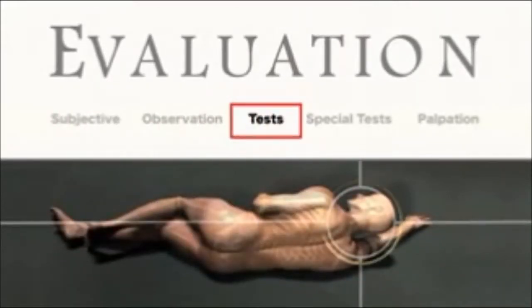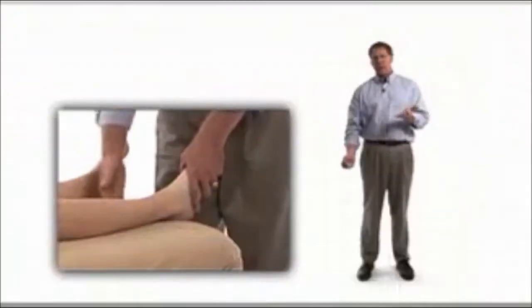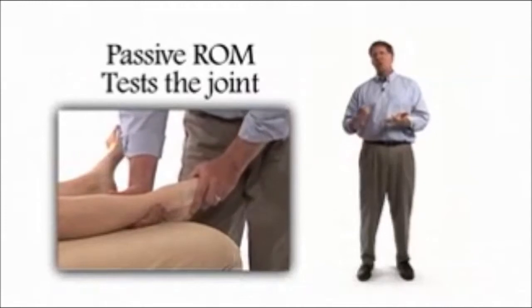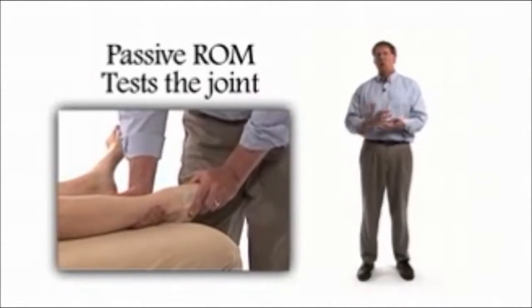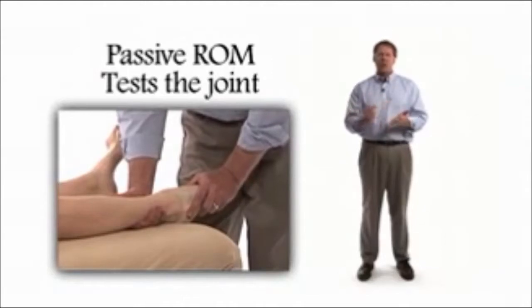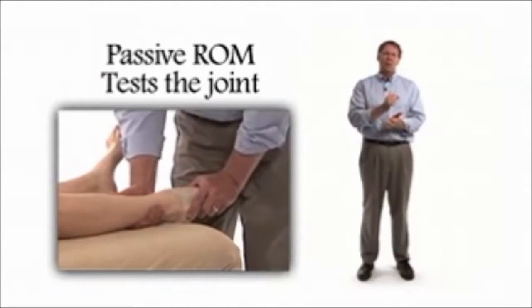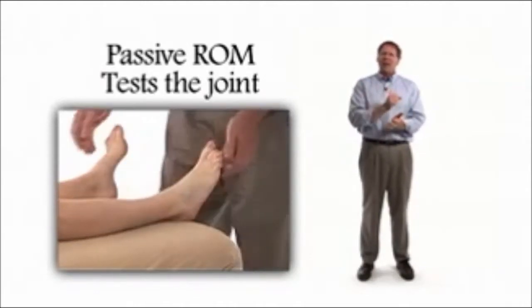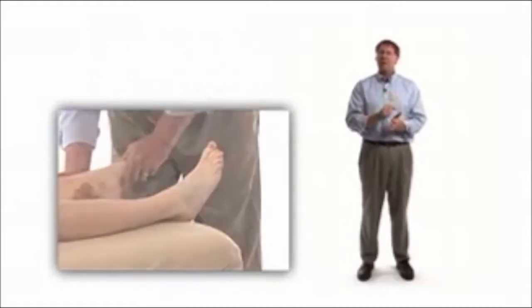Then we'll look at passive range of motion, in which the examiner will move the joint through space. Passive range of motion looks specifically at joint mobility testing and the end feel of that joint. When you bring a joint to its end range, does it have the normal end feel specific to that joint? And is there pain involved at the end of those motions? So passive range of motion looks specifically at joint structures and stability.